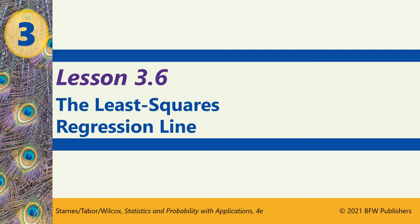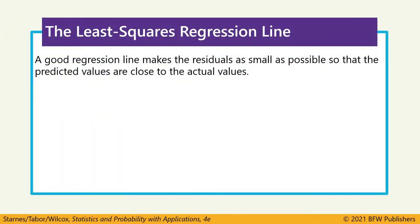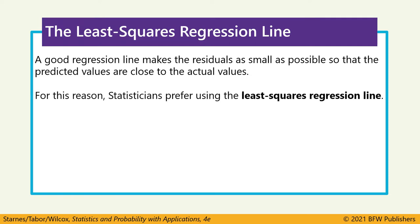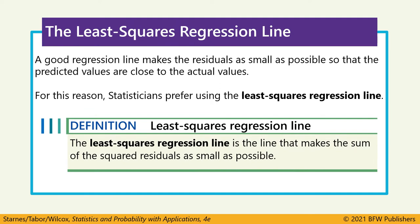Lesson 3.6: the least squares regression line. When we make a regression line, we're trying to get the best line to make predictions from a scatter plot. We want to minimize the residuals so that the predicted values are as close as possible to the actual values. We use a method called the least squares regression line — the line that makes the sum of the squared residuals as small as possible.